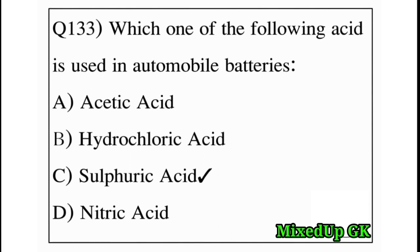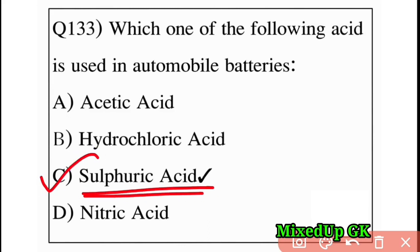Next question: which acid is used in automobile batteries? Option A: acetic acid, Option B: hydrochloric acid, Option C: sulfuric acid, Option D: nitric acid. The answer is Option C: sulfuric acid, which is used in automobile batteries.